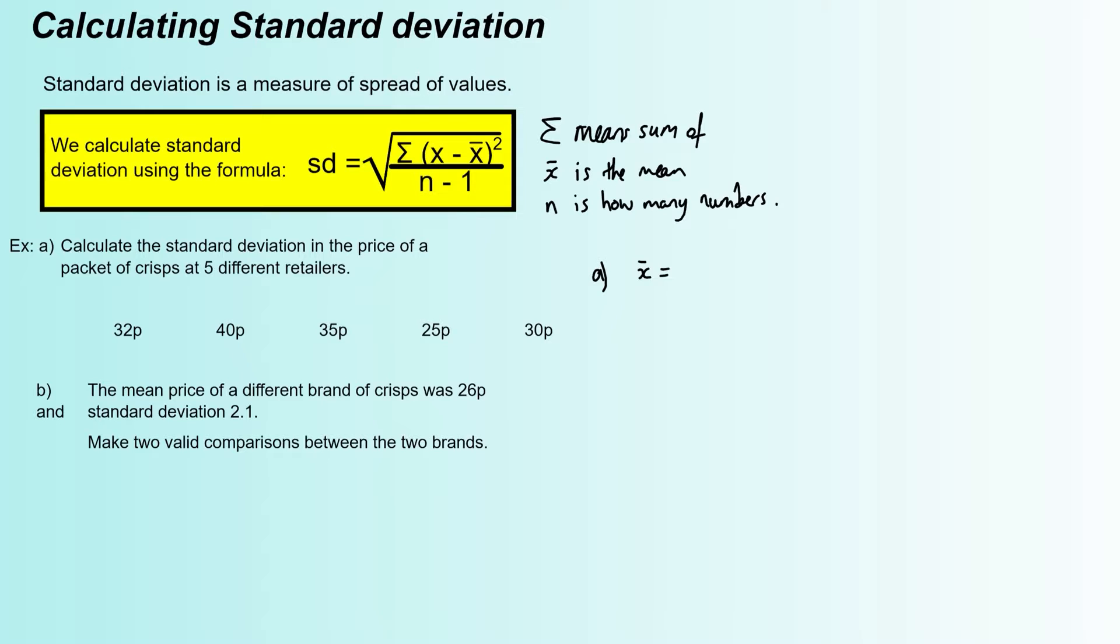...let me just get the calculator. That's 162. And we're dividing by 5 because it's 5 numbers. That gives us 32.4. So the mean price of a packet of crisps from these five retailers was 32.4 pence. We don't really need the answer in there because that's not a final answer, but it doesn't hurt to put units in. So that's the kind of average price using the mean.